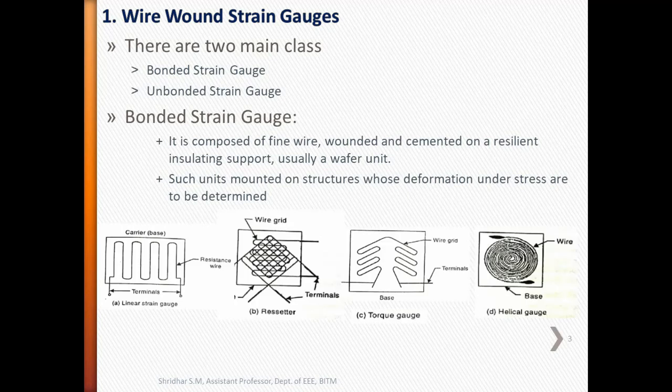The following figures show some commonly used forms of resistance wire strain gauges. Figure A shows a linear strain gauge where resistance wire is cemented on a carrier base and terminals are taken out. Figure B shows rosettes where wire is gridded in a specific shape on a base.